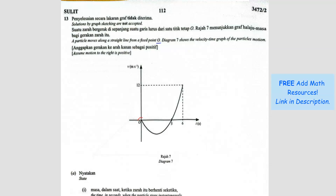We can see that the particle is starting from point O. The negative part of the graph — let's say this is negative 1, negative 2, negative 3 — means the particle is moving to the left. It's moving to the left at an increasing speed, going from 1, 2, 3 and so on, faster and faster, until it reaches the highest point here.